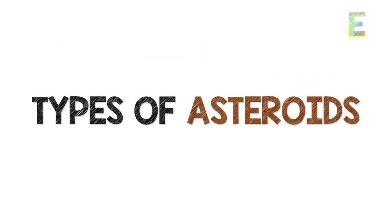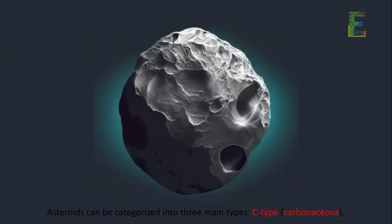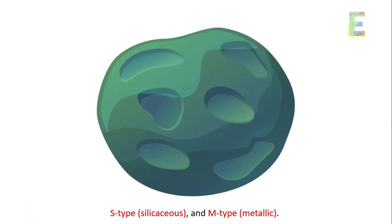Types of Asteroids: Asteroids can be categorized into three main types: C-type (Carbonaceous), S-type (Silicaceous), and M-type (Metallic).